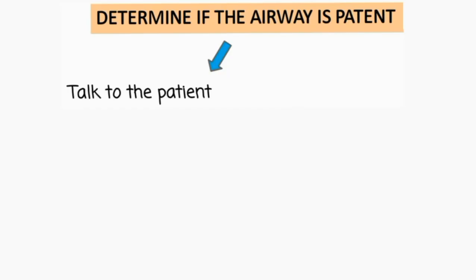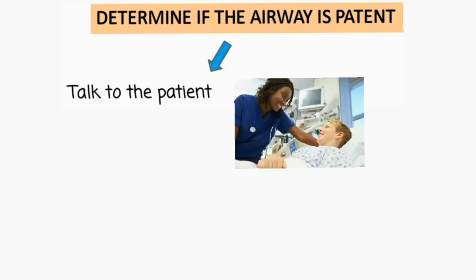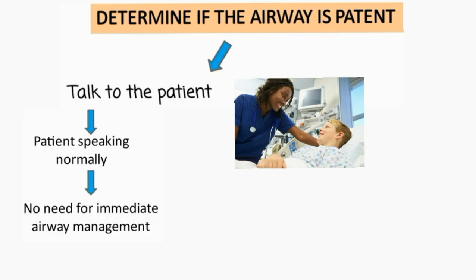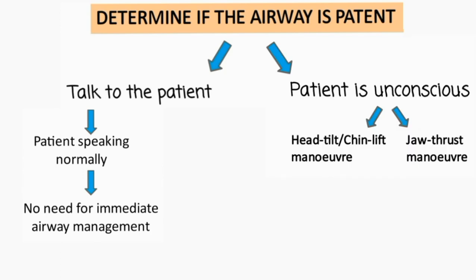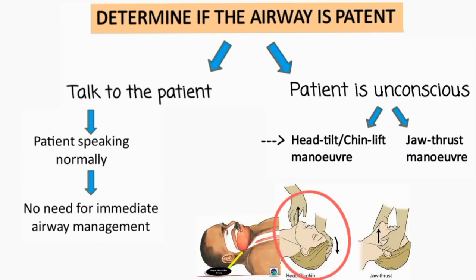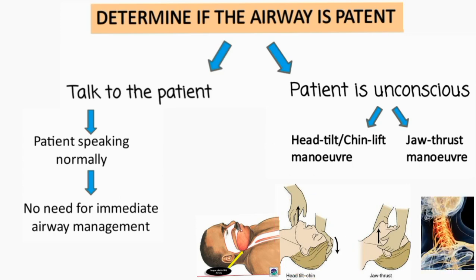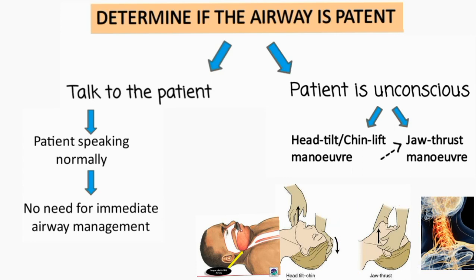An easy way to determine whether the airway is patent is to talk to the patient. If the patient is speaking normally, there is generally no need for immediate airway management. But if the patient is unconscious, a head-tilt chin-lift maneuver is used to prevent the tongue from blocking the airway. If cervical spine injury is suspected, jaw thrust maneuver is used instead, because head-tilt chin-lift can cause more damage to the spine.